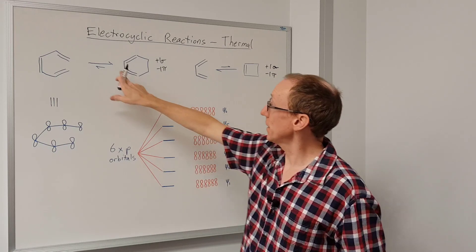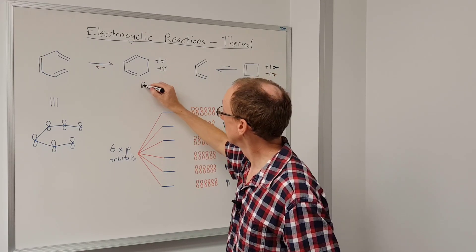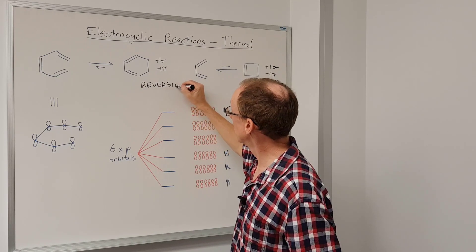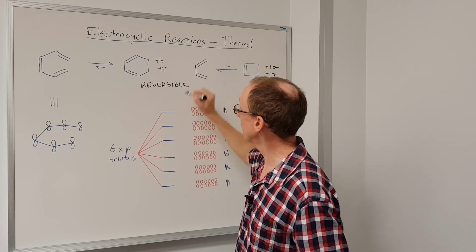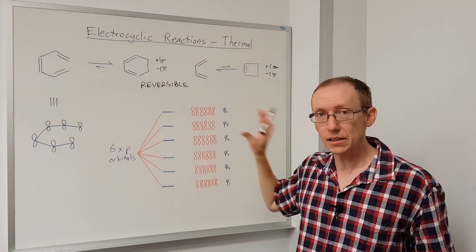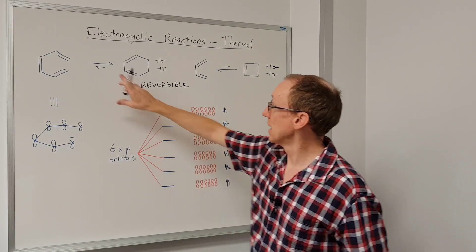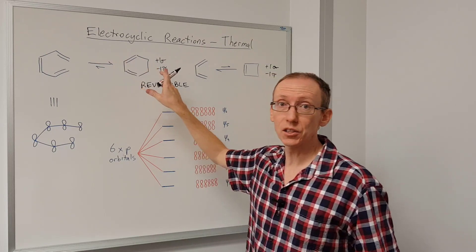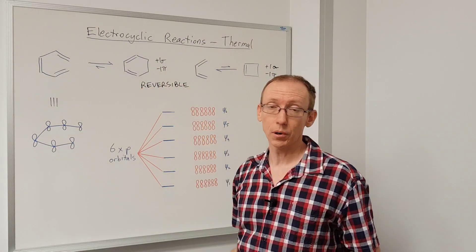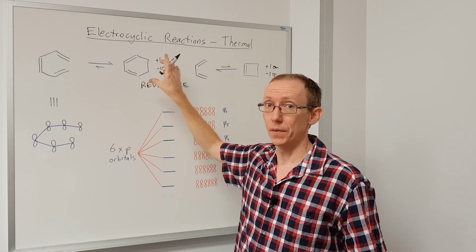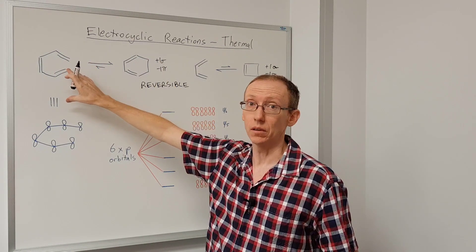Now these are reversible reactions, even if you see them drawn with unidirectional arrows. Unless there's something special happening, they're going to be reversible reactions, and the equilibrium lies towards the side of the more stable product, obviously, and that will depend on the exact structural features of the product versus the starting material.